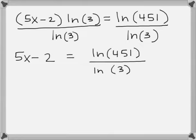There are two options at this point. One is to plug ln 451 divided by ln 3 into your calculator and get an approximation, roughly around 5.5629. You could replace that whole right-hand side by this approximation. If you're going to do it that way, make sure you take enough decimal places. We want our answer to round to two decimal places, so take a couple of extra decimal places there.